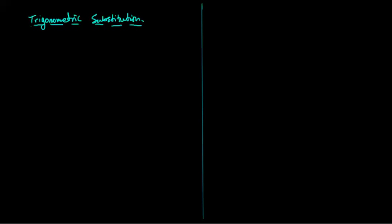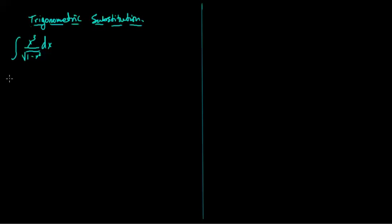All right. Today, I'll do an integral on trigonometric substitution. The integral that we will consider is x cubed over the square root of 1 minus x squared dx. The main idea is to change this to a trigonometric expression that we can integrate. Before I do this example, let me just do a brief introduction of what the main technique looks like.